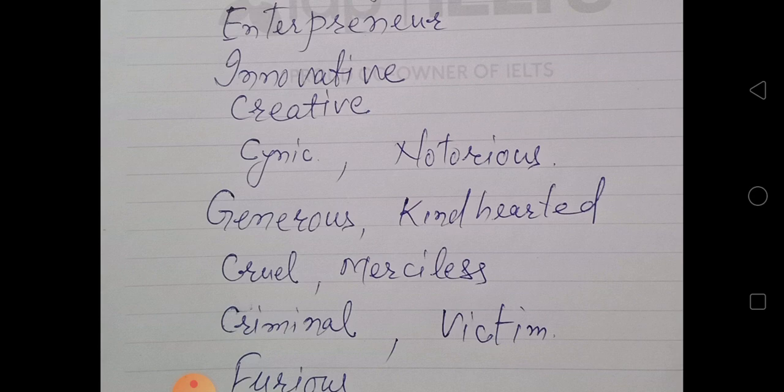Generous: kind-hearted, diligent. Guru Nanak Dev Ji was a truly generous person. Cruel: merciless, zalim. Alexander the Great was a very cruel king.